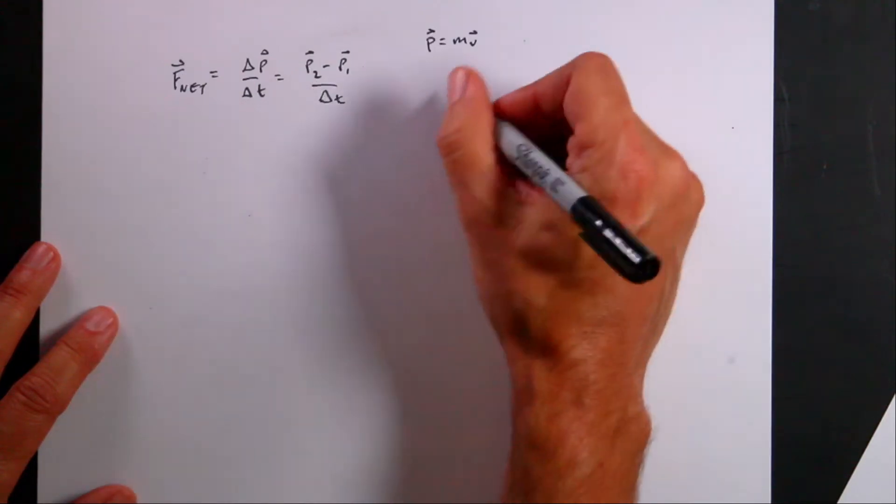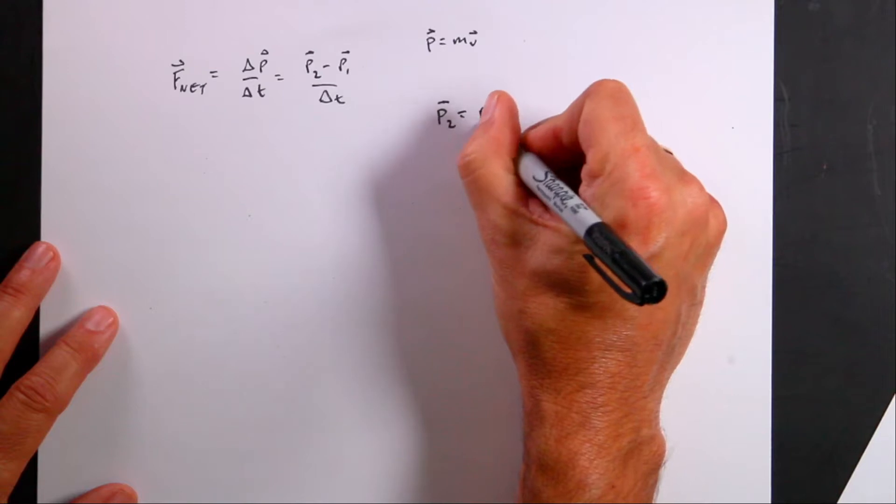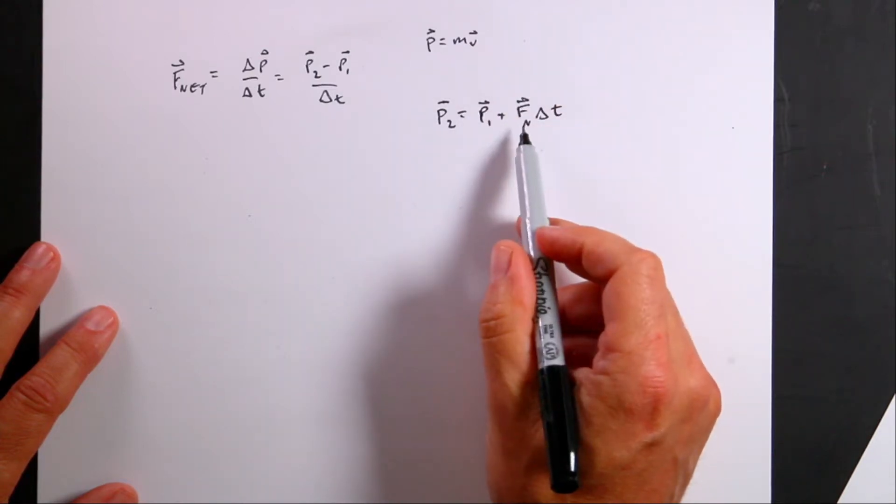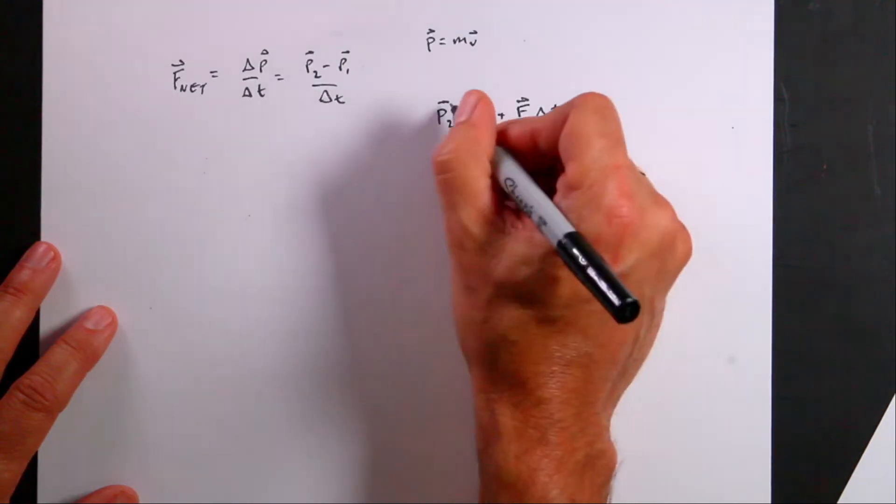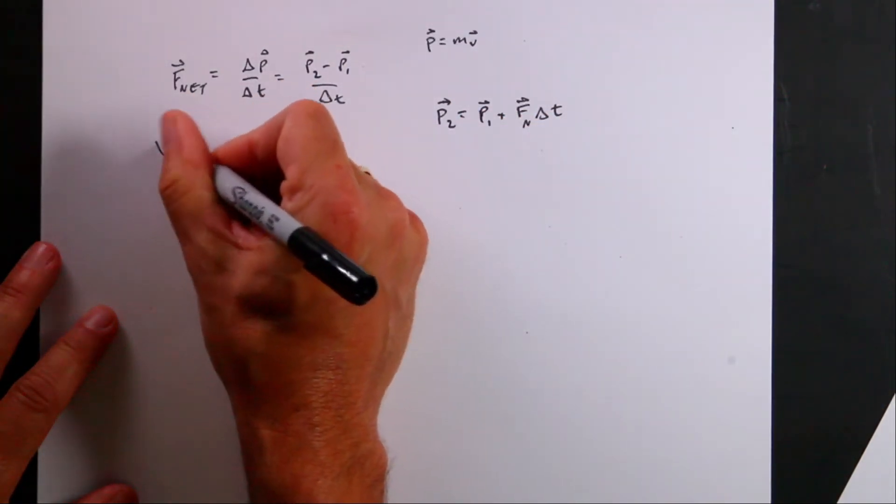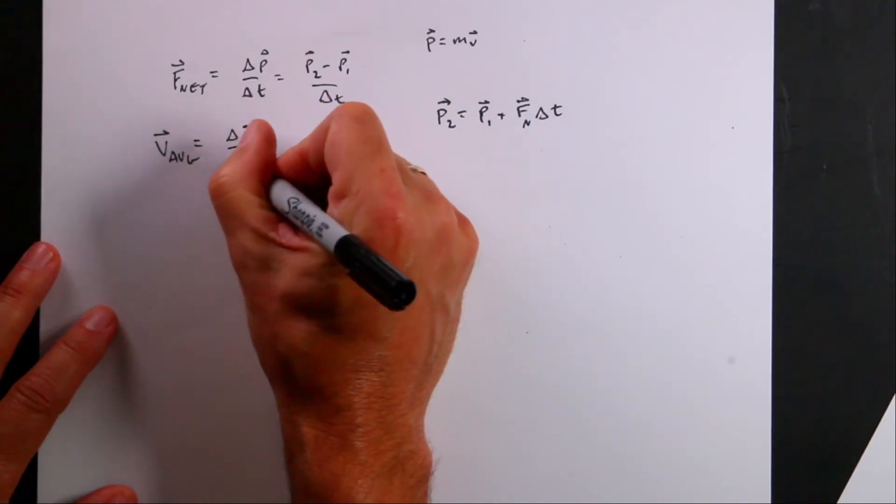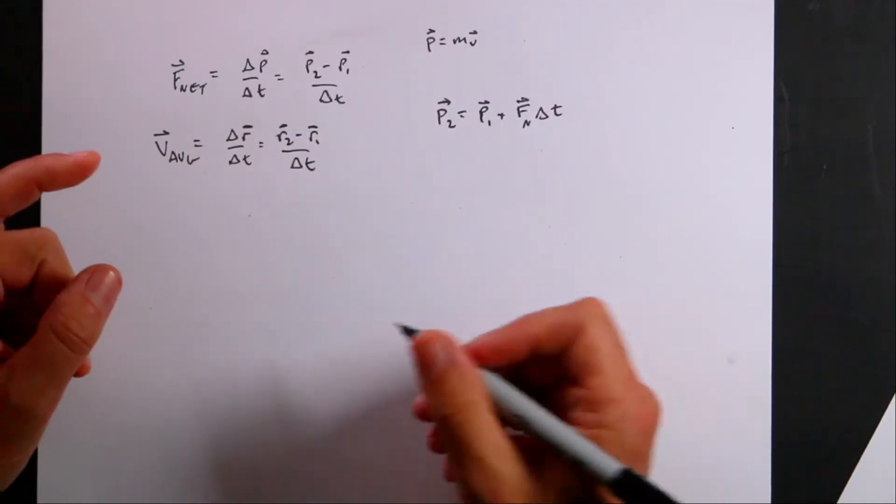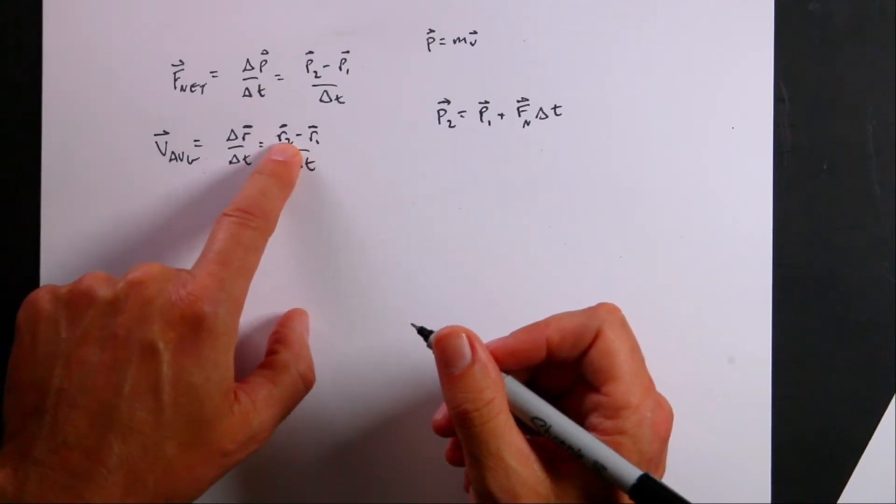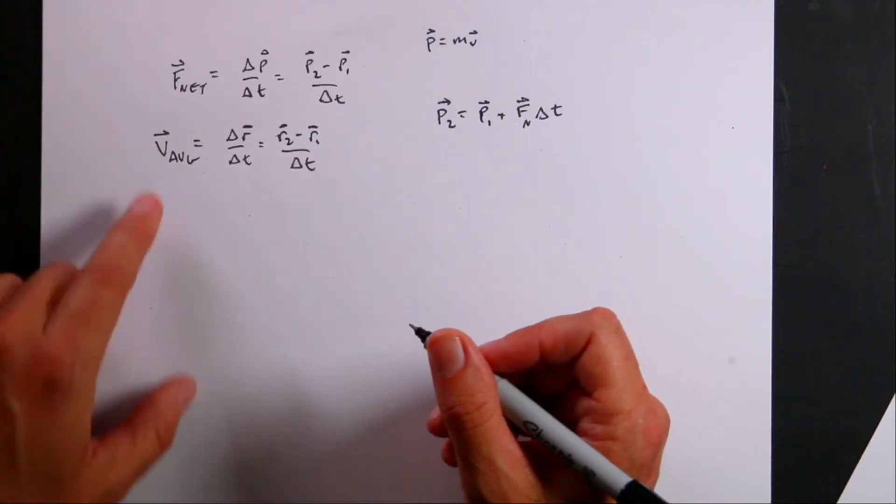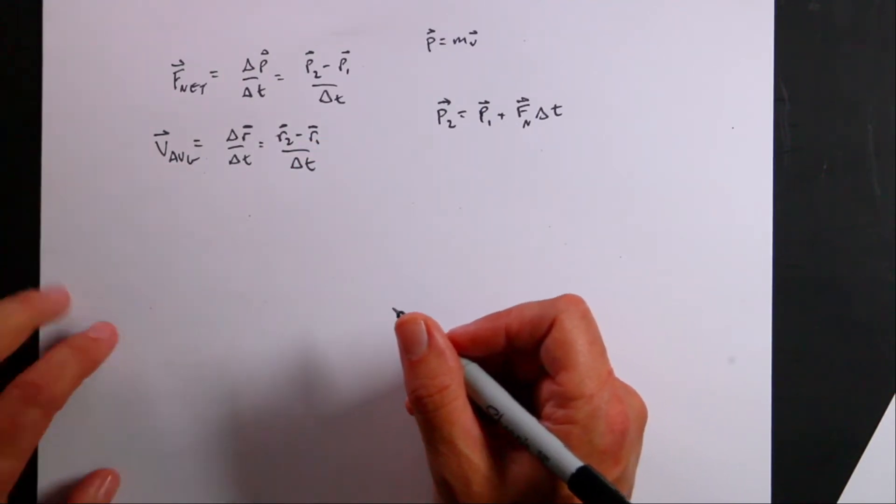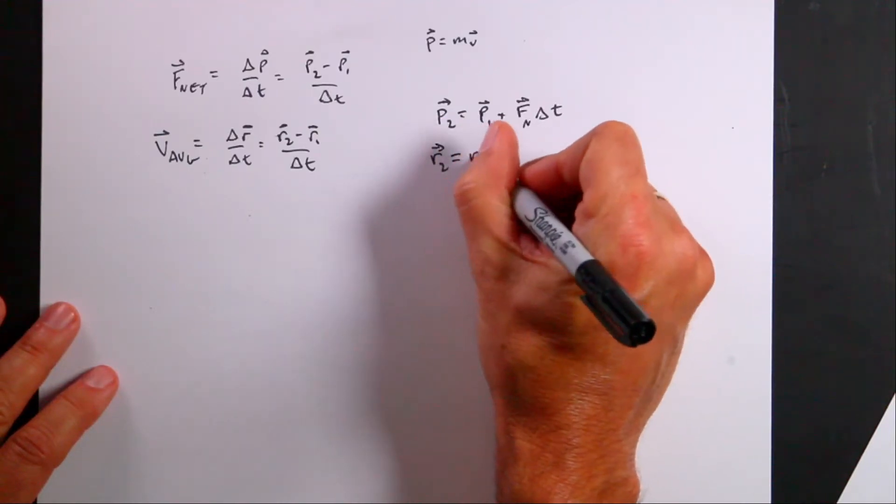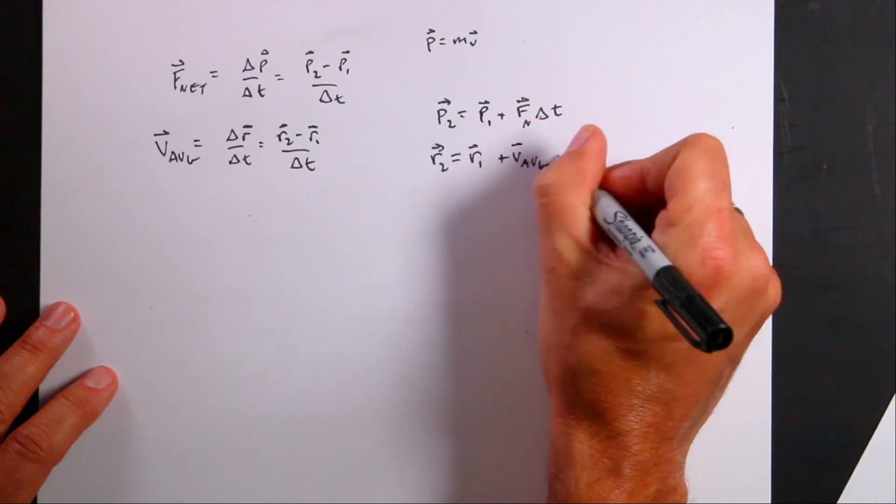So P2 is the momentum at the end of the time interval and P1 is the momentum at the beginning, where P in general is mass times velocity as a vector. I can solve this for P2 and I get P2 equals P1 plus F net delta T. So if I know the net force on an object over some time interval, I can find the new momentum. Now let's look at the definition of average velocity, R2 minus R1 over delta T.